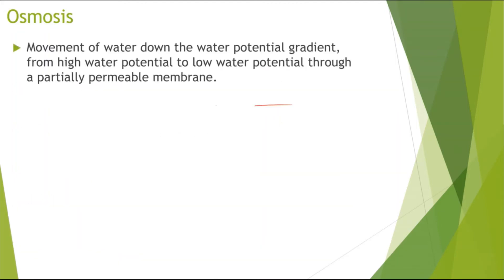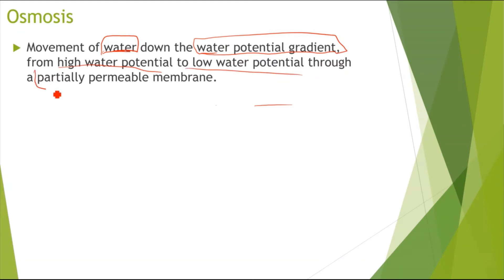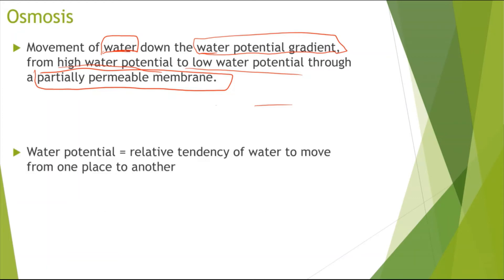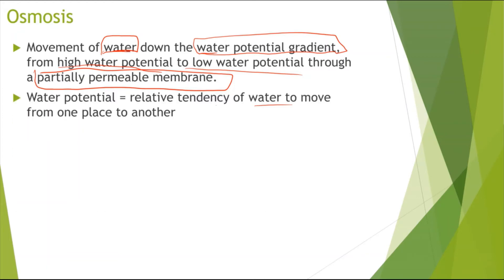We can also have osmosis — this is just the movement of water, and it is only for water. This is down the water potential gradient, so you must use the keyword 'water potential gradient' — from a high water potential to a low water potential. This occurs through a partially permeable membrane, which is an important keyword. Water potential is essentially the relative tendency of water to move from one place to another.